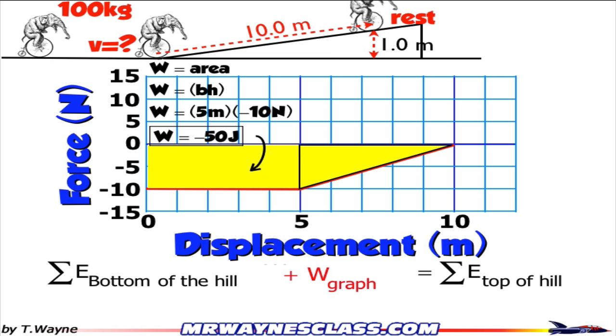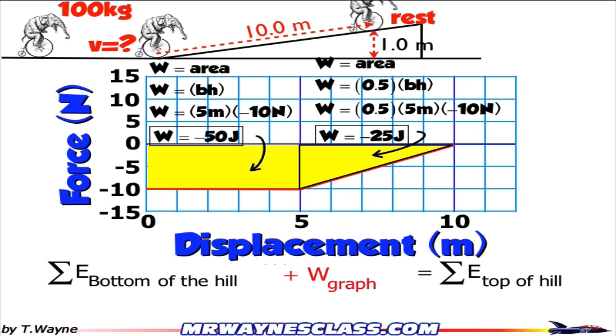And for the triangle, that's going to be 1 half base times height for the area. So 1 half, the base, which is 5 meters, and the height, which is negative 10, that's negative 25 joules. So the total work is going to be negative 75 joules. That's what I'm going to put in down in my expression, eventually, for the work of the graph.